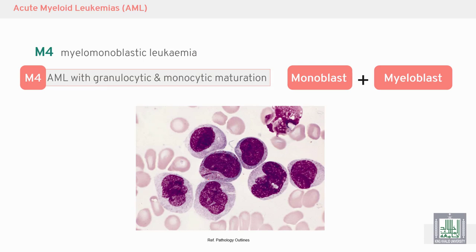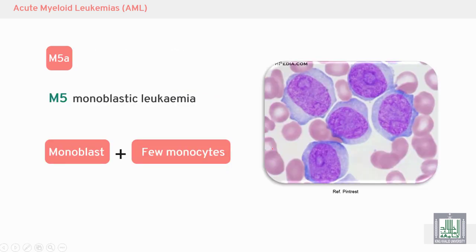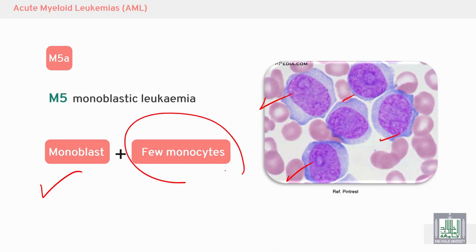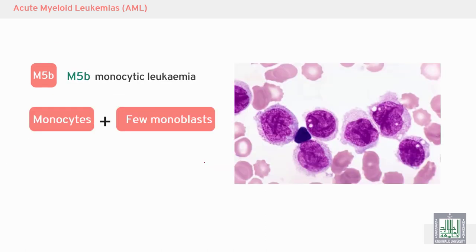M4 is myelomonocytic leukemia — both granulocytic and monocytic. We have myeloblasts with Auer rods and we have monoblasts. M5 is monoblastic leukemia. M5a is pure monoblastic, with few monocytes.